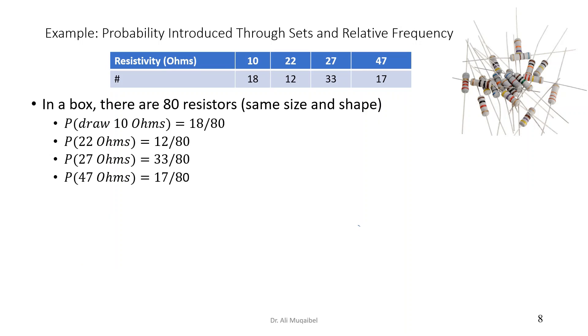Now for this last example, we are drawing from a box of resistors. Those resistors have different values. The values could be 10 ohm, 22, 27, or 47. Inside this box there are 18 resistors of 10 ohm, 12, 33, and 17 respectively. So in the table we're showing the resistivity and the number of resistors in the box. So the total number of resistors, if you add these numbers together, you'll get 80.